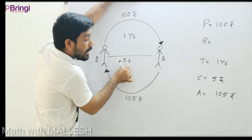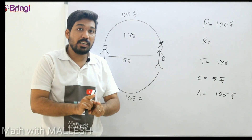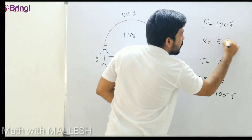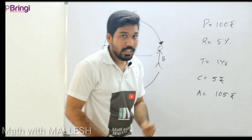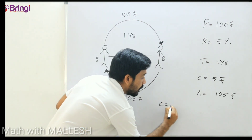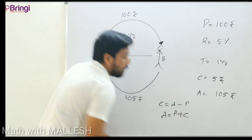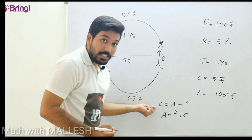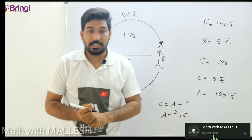The time period is one year. Rate of interest: for every 100 rupees, he is going to get 5 rupees extra. Rate of interest is calculated for 100 rupees, so the rate of interest is 5% per annum. P is 100, A is 105 rupees, and CI is 5 rupees. Compound interest equals amount minus principal, and amount equals principal plus compound interest. These two formulas are very important.